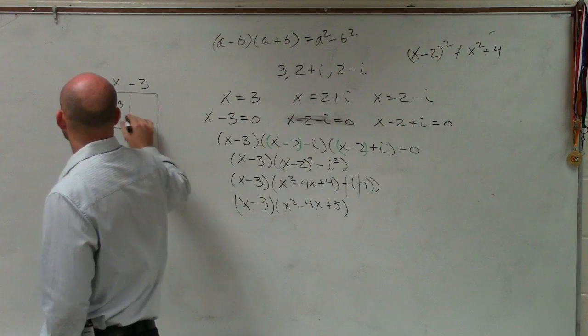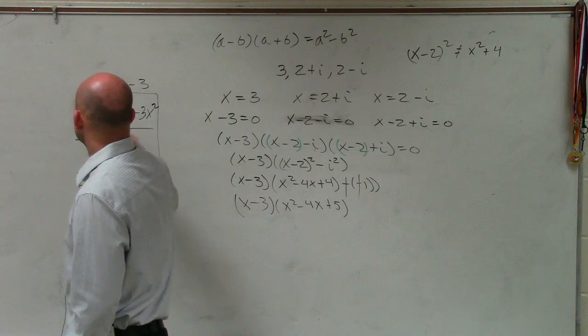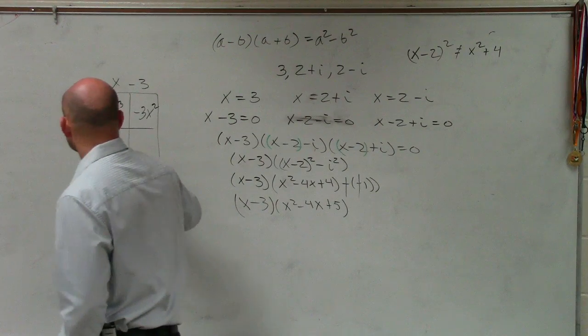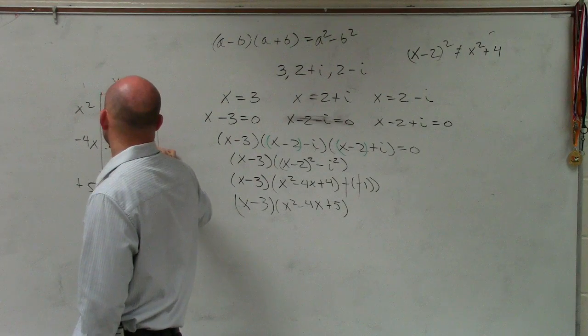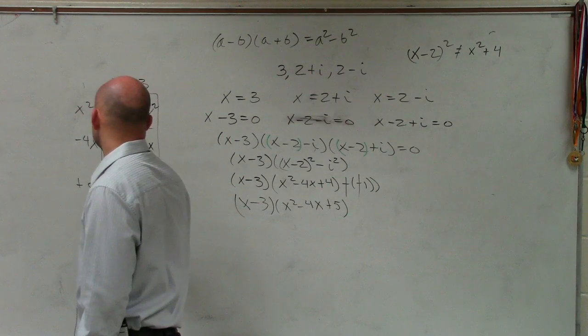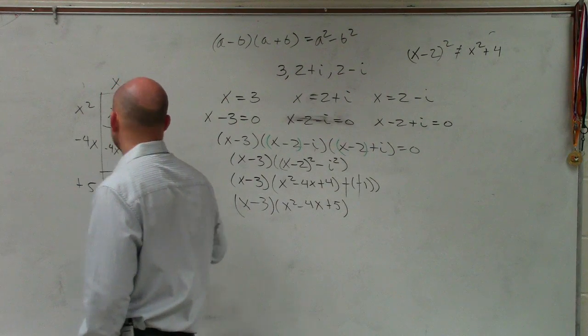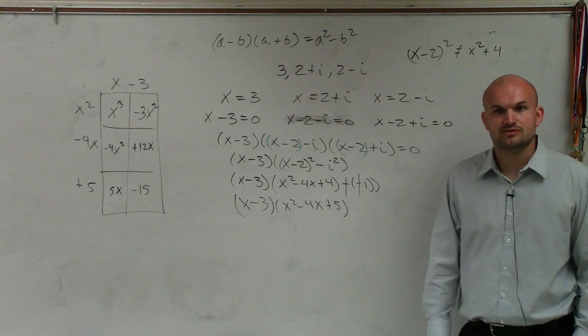So this is x cubed. x squared times negative 3 is negative 3x squared. x times negative 4x is negative 4x squared. Negative 4x times negative 3 is going to be a positive 12x. That becomes 5x. And this becomes a negative 15. Anybody have any questions so far with that?